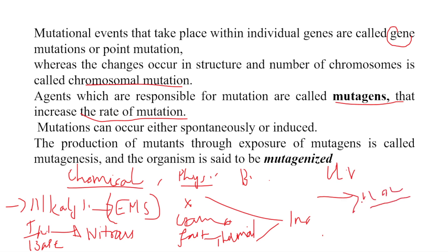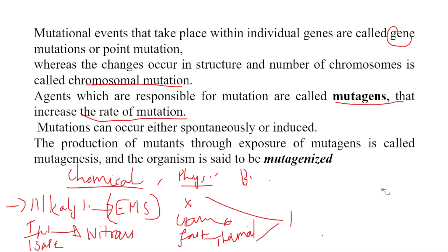UV light causes the formation of thymine dimers in DNA. Biological mutagens include viruses, transposons, and IS elements.